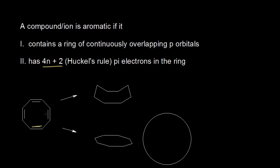Here is the cyclooctatetraene molecule. If I count the pi electrons, I can see there are a total of 8 pi electrons in this molecule. And each carbon in cyclooctatetraene is sp2 hybridized, so each carbon has a free p orbital.